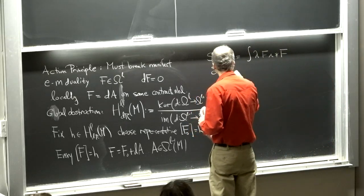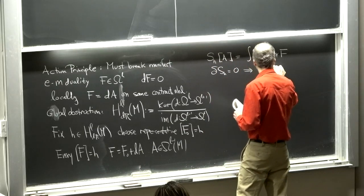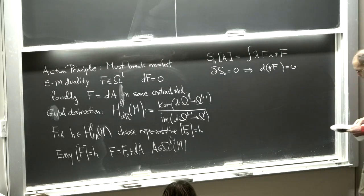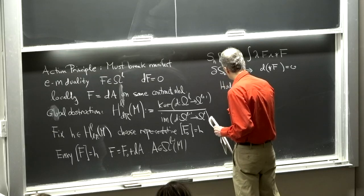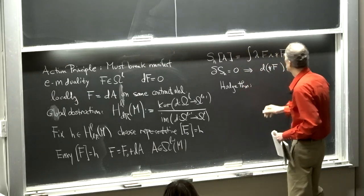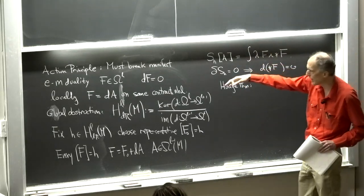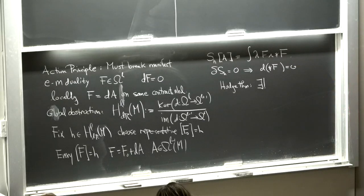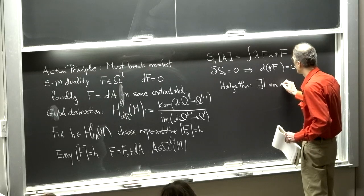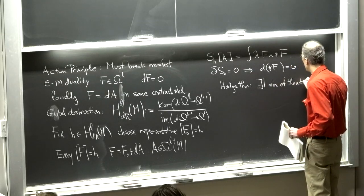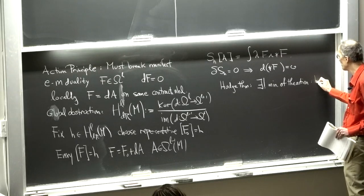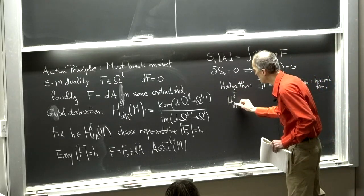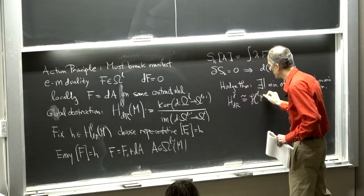The stationarity condition implies the other Maxwell equation, since we already imposed the first. There's a Hodge theorem which says that on a compact Euclidean manifold, this action on representatives of a given cohomology class has a unique minimum. That defines a harmonic form — and that's the proof that de Rham cohomology is isomorphic to the space of harmonic forms.